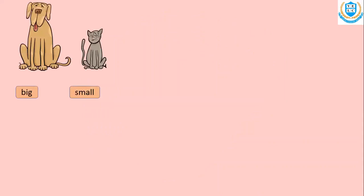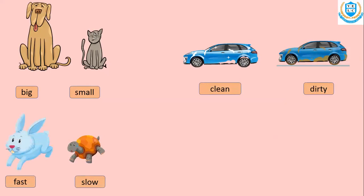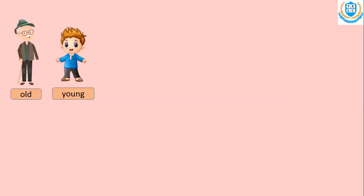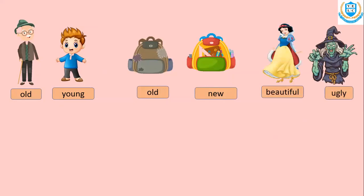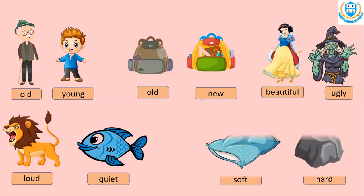Big and small. Clean and dirty. First and slow. Light and heavy. Old and young. Old and new. Beautiful and ugly. Loud and quiet. Soft and hot.